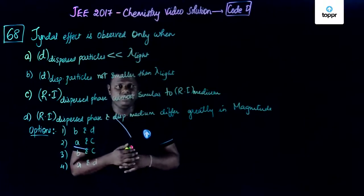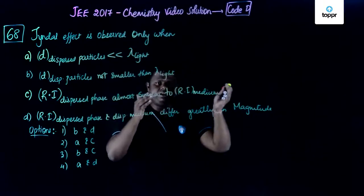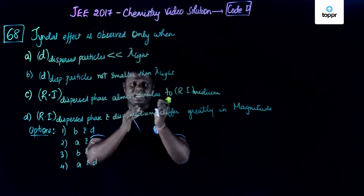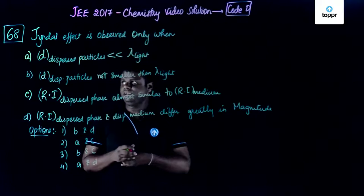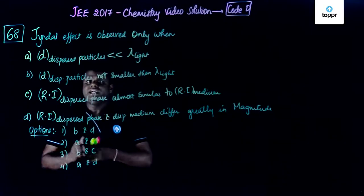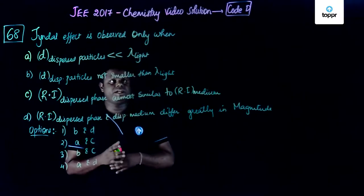Tyndall effect is basically scattering of light by particles. When a beam of light falls on the particle, they actually scatter light. This has been widely studied. Tyndall effect is observed only when, there are four options given, dispersed particles and dispersion medium.